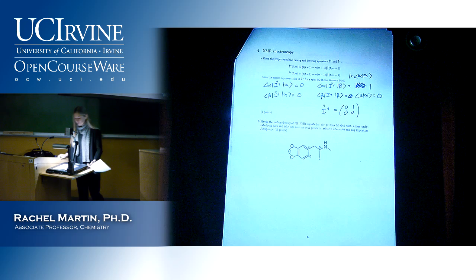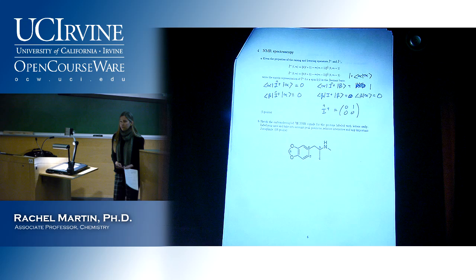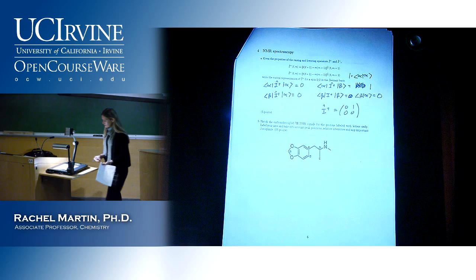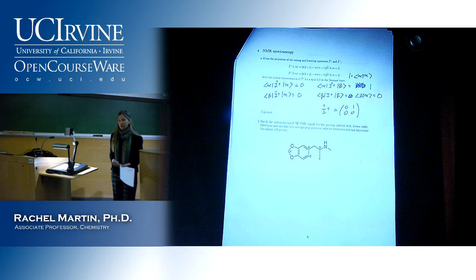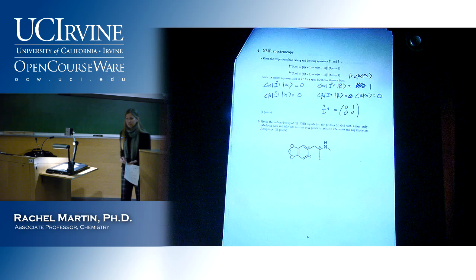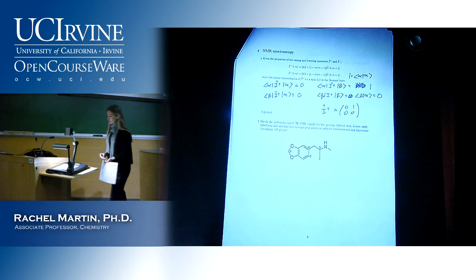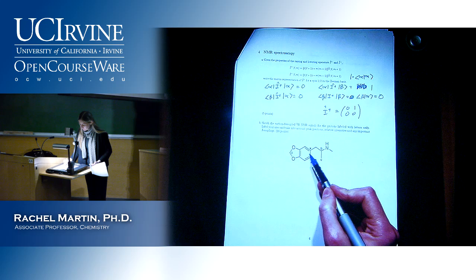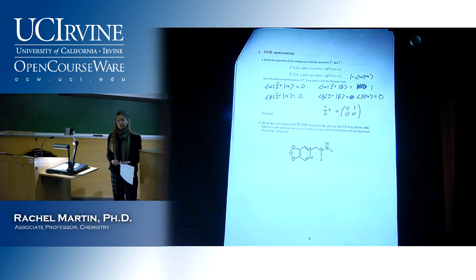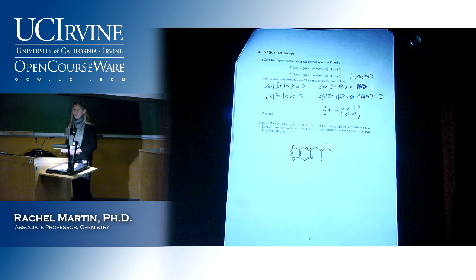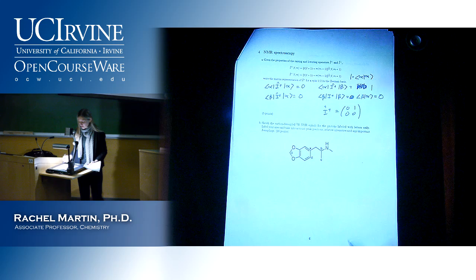Now let's look at NMR spectra. This question required reading the directions carefully. People wasted time by not drawing the spectrum only for the labeled protons — some people crossed out my labels and relabeled the whole molecule. People also tried to draw a proton for the one labeled with a star, which has four bonds to that carbon. Reading the directions is important; there are things in there meant to save you time.